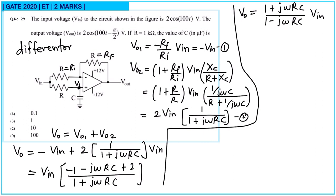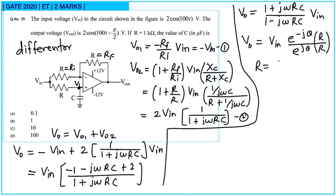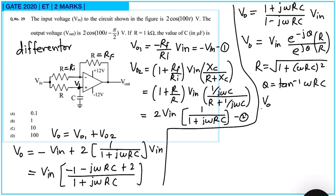These are complex conjugate numbers, so we write them in exponential form. The magnitudes of numerator and denominator are equal — both equal √(1 + (ωRC)²) — so they cancel. The ratio Vo/Vin = e^(jθ) / e^(−jθ) = e^(2jθ), where θ = tan⁻¹(ωRC).